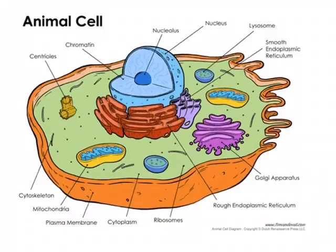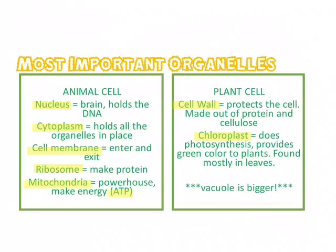You also might have noticed that there were mitochondria in both cell types — plant and animal. That's because both plants and animals use mitochondria to produce energy for their cells. Just to recap in words: animal cells have a nucleus, cytoplasm, cell membrane, ribosomes, and mitochondria to make ATP, which is the usable energy.